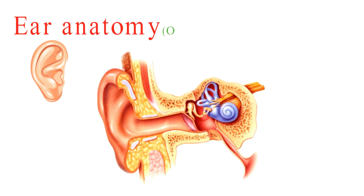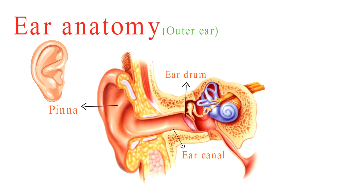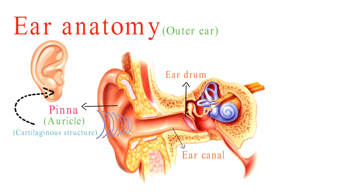Starting with the outer ear, which consists of three parts: the pinna, the ear canal, and the eardrum. The visible part of the ear, the pinna — also known as the auricle — is the cartilaginous structure we often refer to as the ear. Its primary function is to collect sound waves and funnel them into the ear canal.